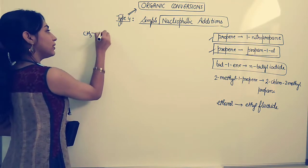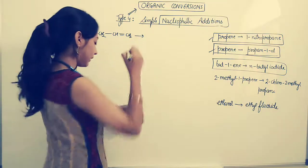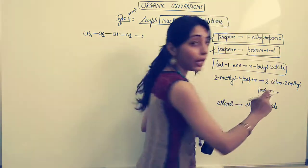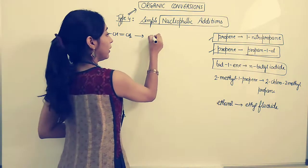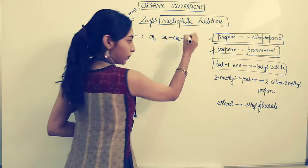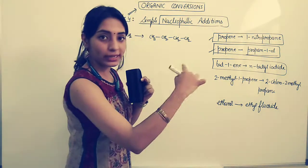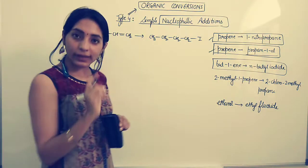The next question tells us but-1-ene, which is CH3-CH2-CH double bond CH2, and this has to be converted to N-butyl iodide. First let me show you how to write N-butyl iodide. CH3-CH2-CH2-CH2-I. N-butyl means the butyl thing has to be the straight chain in the normal fashion, and we have iodine here.